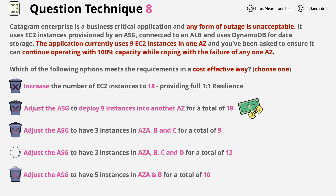The correct answer is answer four. This has us deploying three instances into four different availability zones — A, B, C, and D — for a total of 12 instances. If one availability zone fails, the other three availability zones provide three instances each for a total of nine instances, which is the minimum capacity of the application, meaning the system can continue operating. Comparing answer four with answer two: both work, but answer four does it with fewer instances, making it more cost-effective — and that's why it's the correct answer.